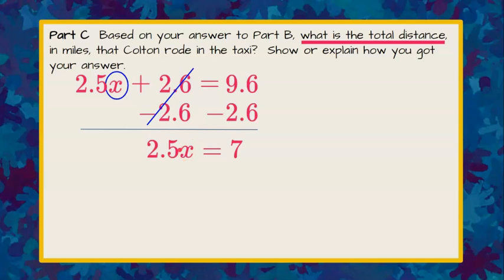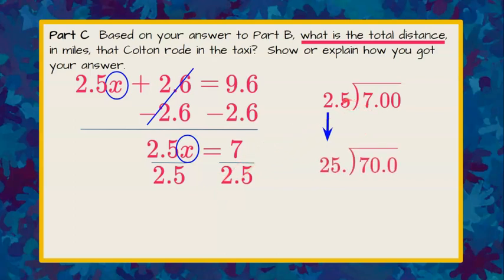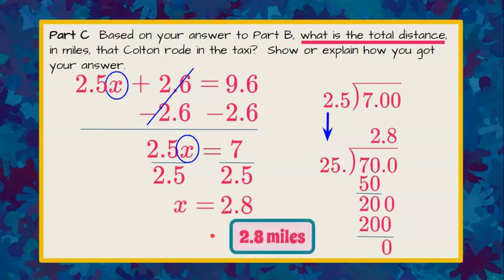Now I need to solve for X and I'm going to undo multiply by 2.5 and divide each side by 2.5. Seven divided by 2.5—I need to move the decimal point one space to the right and what I do to the divisor I have to do to the dividend. So really I'm doing 70 divided by 25. 25 goes into 70 two times. Two times 25 is 50. 70 subtract 50 is 20 and bring down your zero. 25 goes into 200 eight times. 8 times 25 is 200 and I have zero left over so I know that X is equal to 2.8 and he went 2.8 miles on his taxi ride.